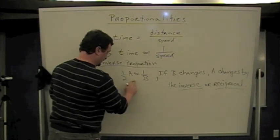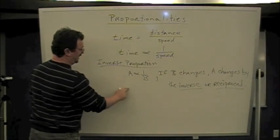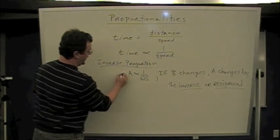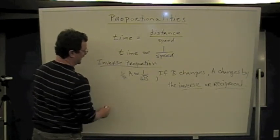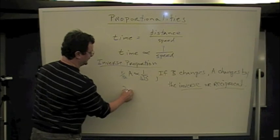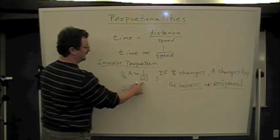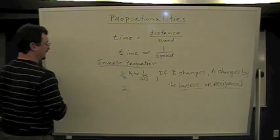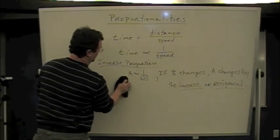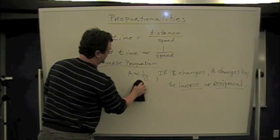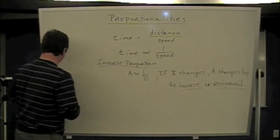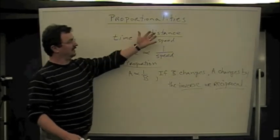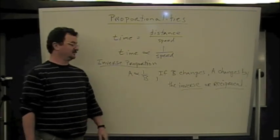On the other hand, if B got smaller, if B were one-half as much, A would be one divided by one-half, which would be two times as much. So if you divide by a smaller number, you get a bigger number. So that's proportions and inverse proportions. We're going to be doing a lot of that in this class, where you have proportionalities and inverse proportions.